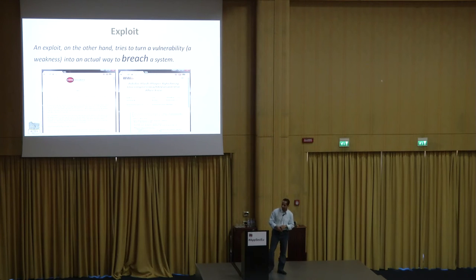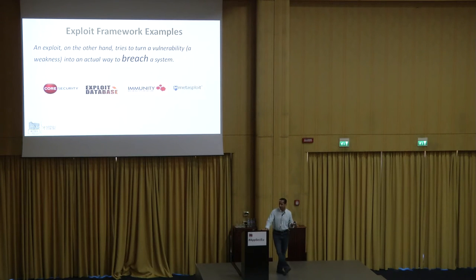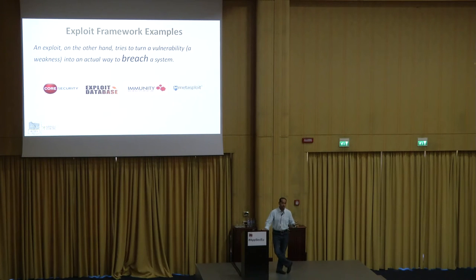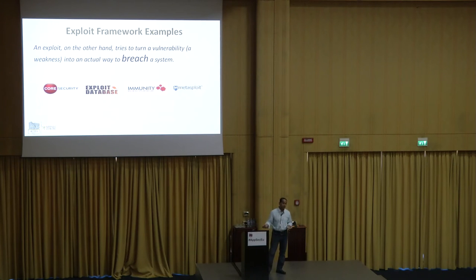There was an exploit in Core Security and in ExploitDB — these are some of the exploit databases. Metasploit and ExploitDB are free open-source exploit databases where you can go and download an exploit for a vulnerability. That will do something like open a calculator, just to prove the concept that if you can open a calculator, you can also run any executable. Core Security and Immunity are some of the paid services that also have exploits — maybe a little more or different types of exploits.